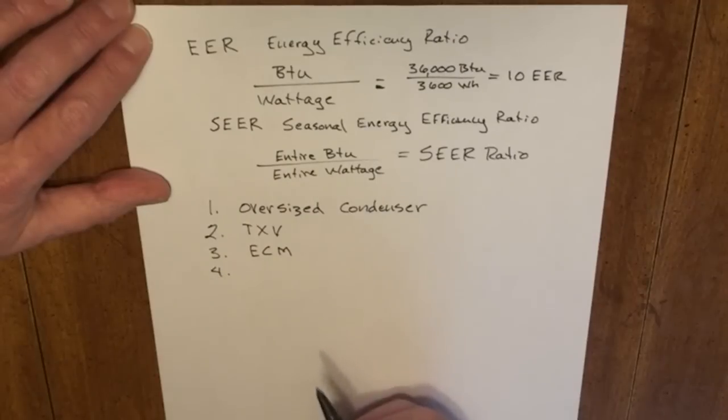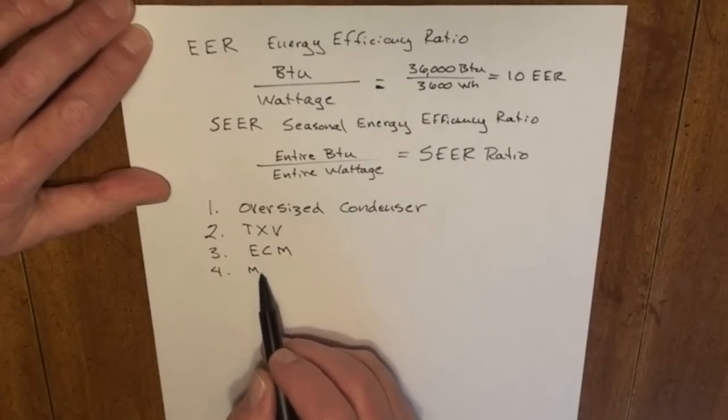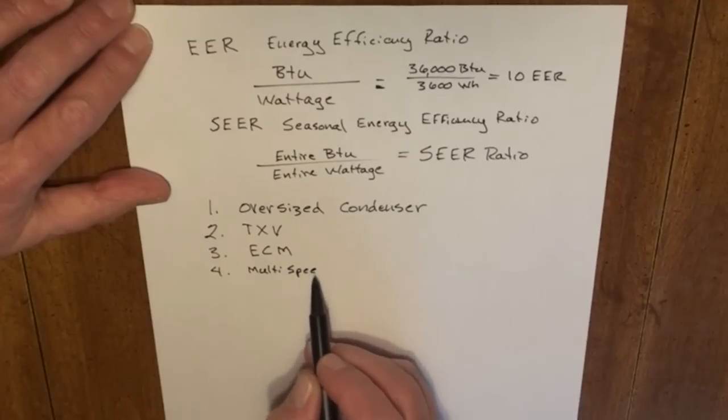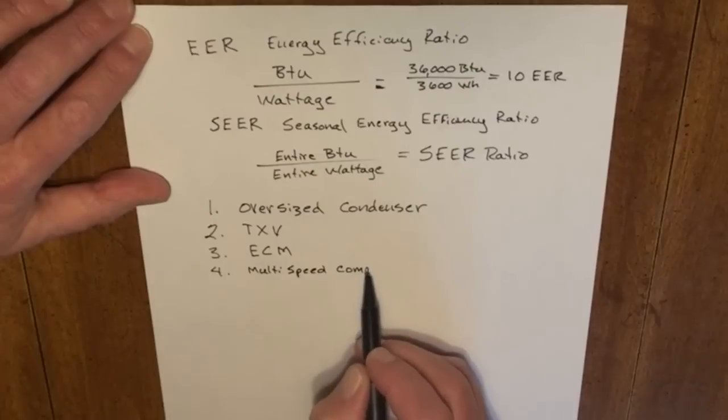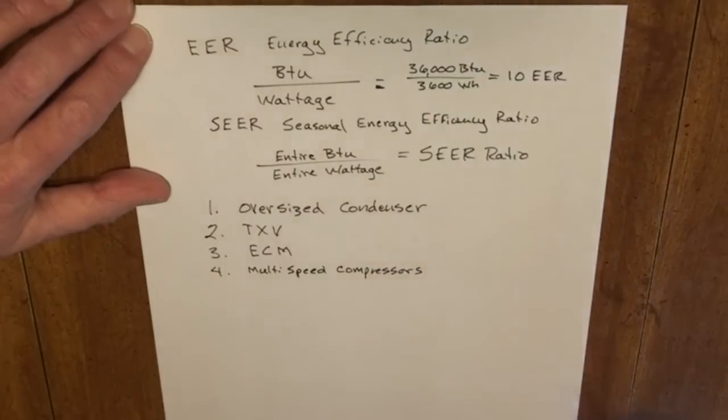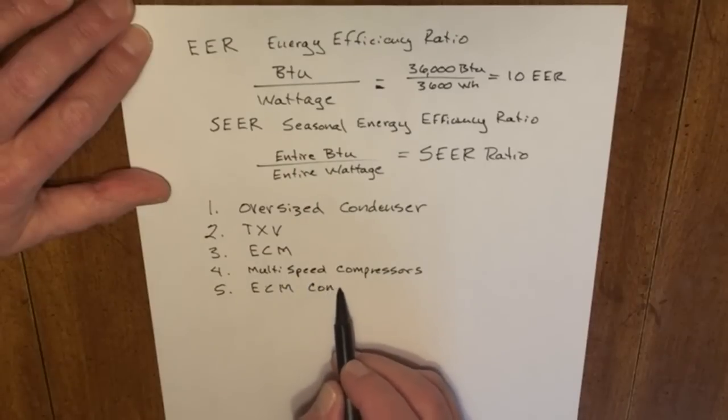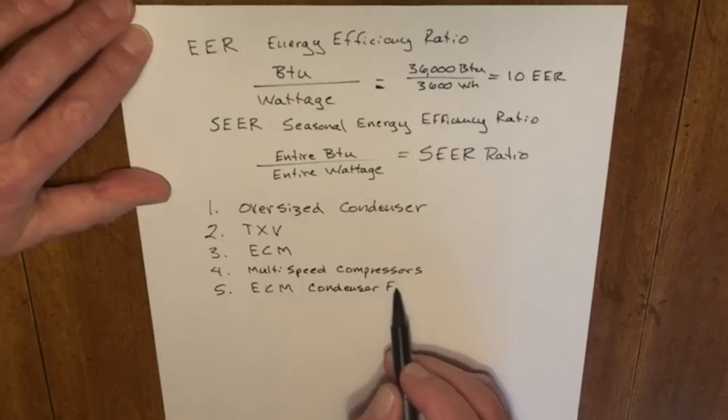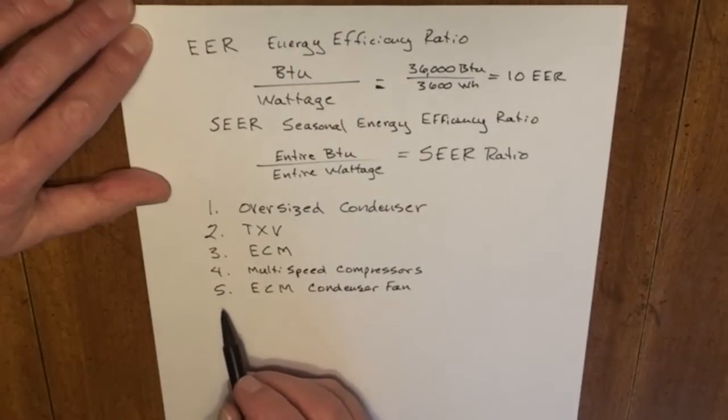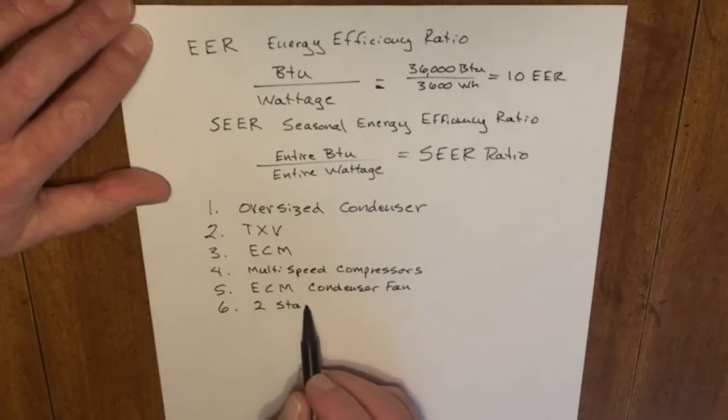Another item that can be used to increase energy efficiency are multi-speed compressors. No need to move more refrigerant than necessary. The multi-speed compressors can adjust their speed and amp draw in accordance with the needs of the structure. Electronically controlled motors for our condenser fans. Another possibility is to use a two-stage compressor.